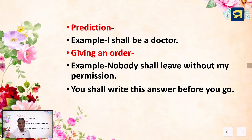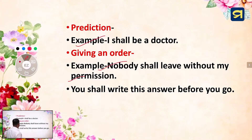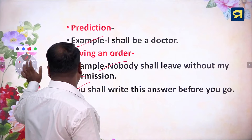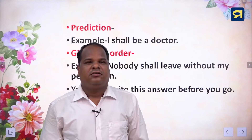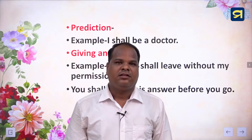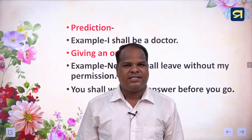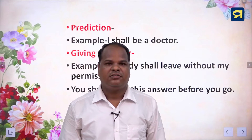Let's know about the other uses of modal shall. Shall can be used in the meaning of prediction. Example: 'I shall be a doctor.' Then, we can use shall for giving an order. Example: 'Nobody shall live without my permission.' In the next example, 'You shall write this answer before you go.' When the modal shall is used with another subject except I or we, that means threat, order, or compulsion.